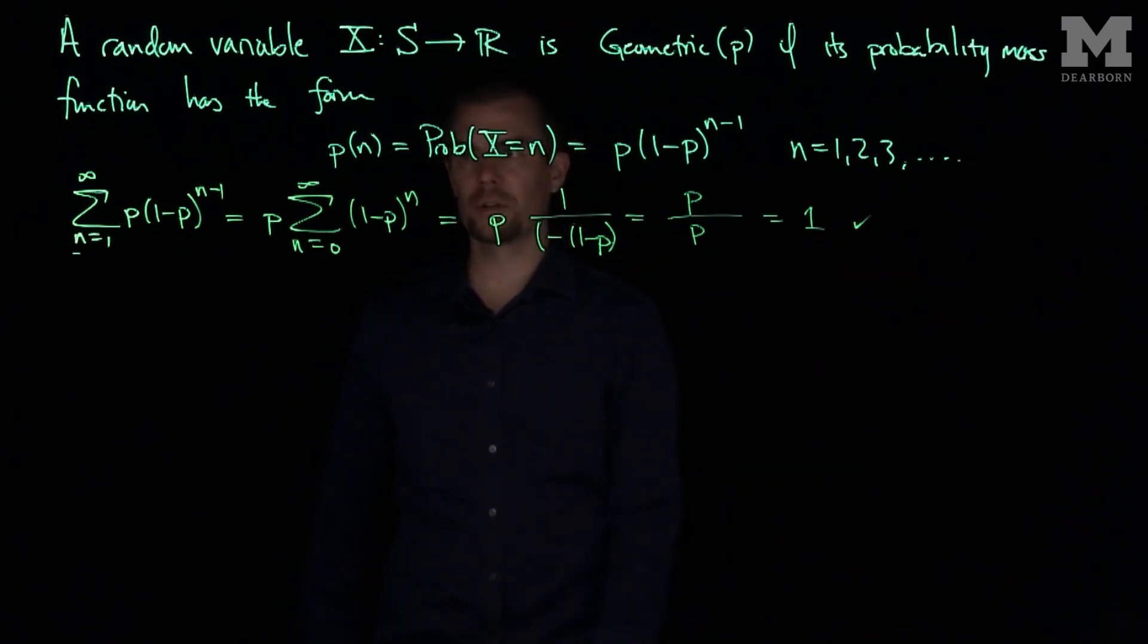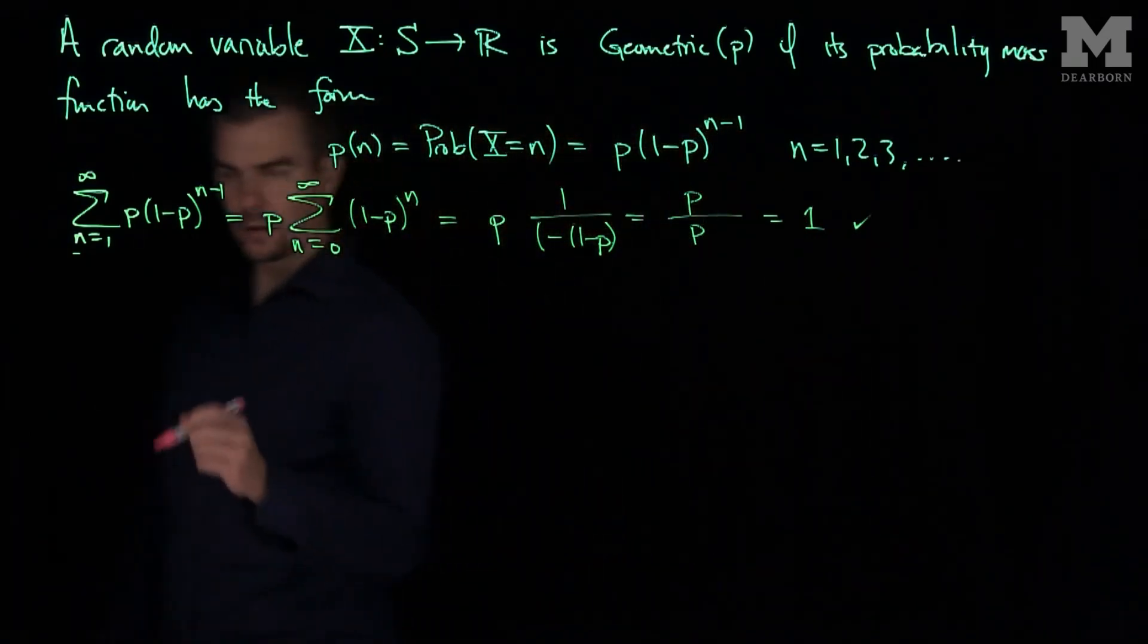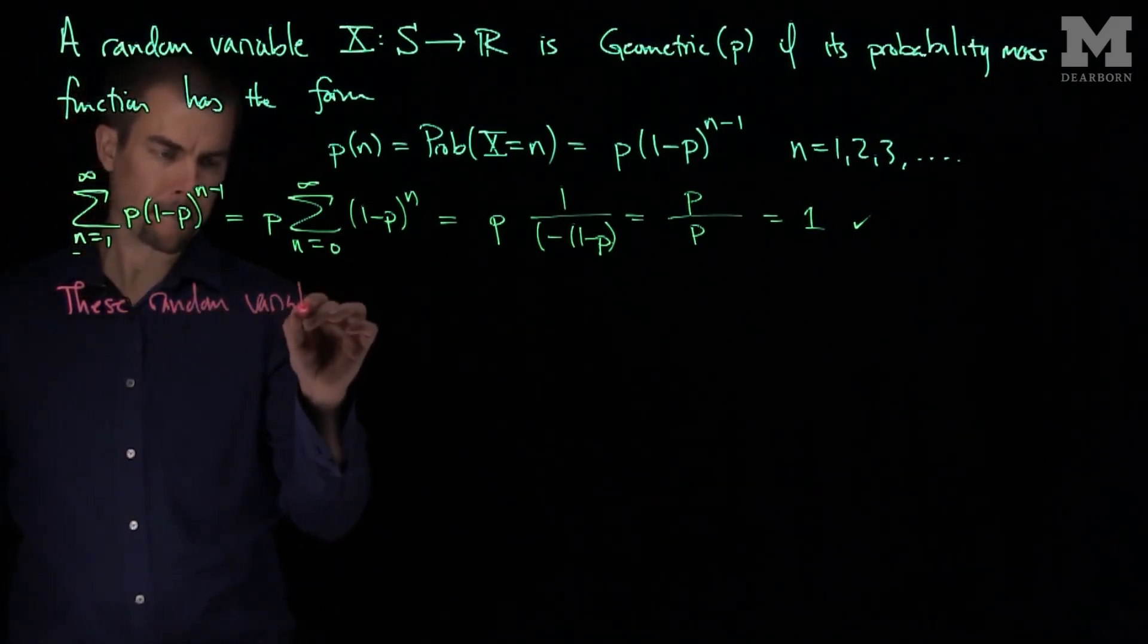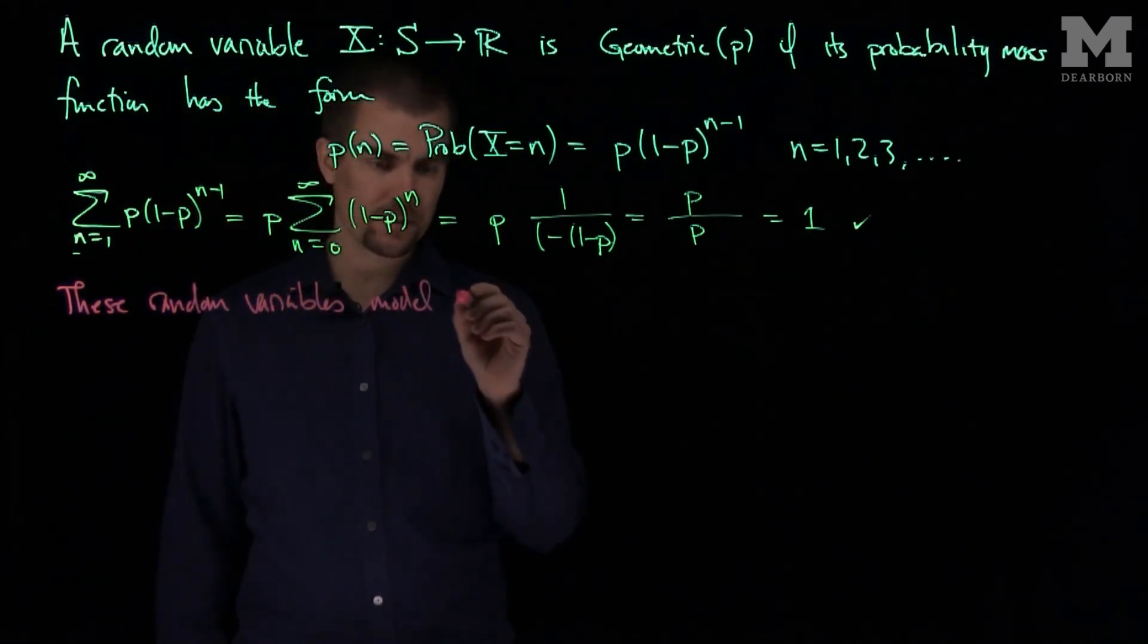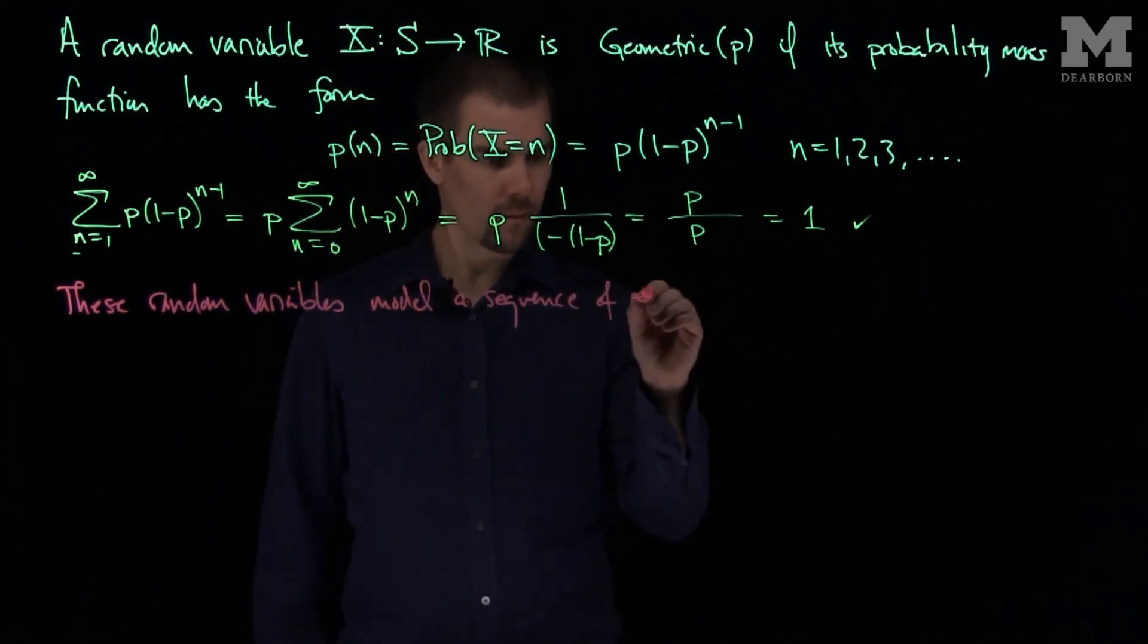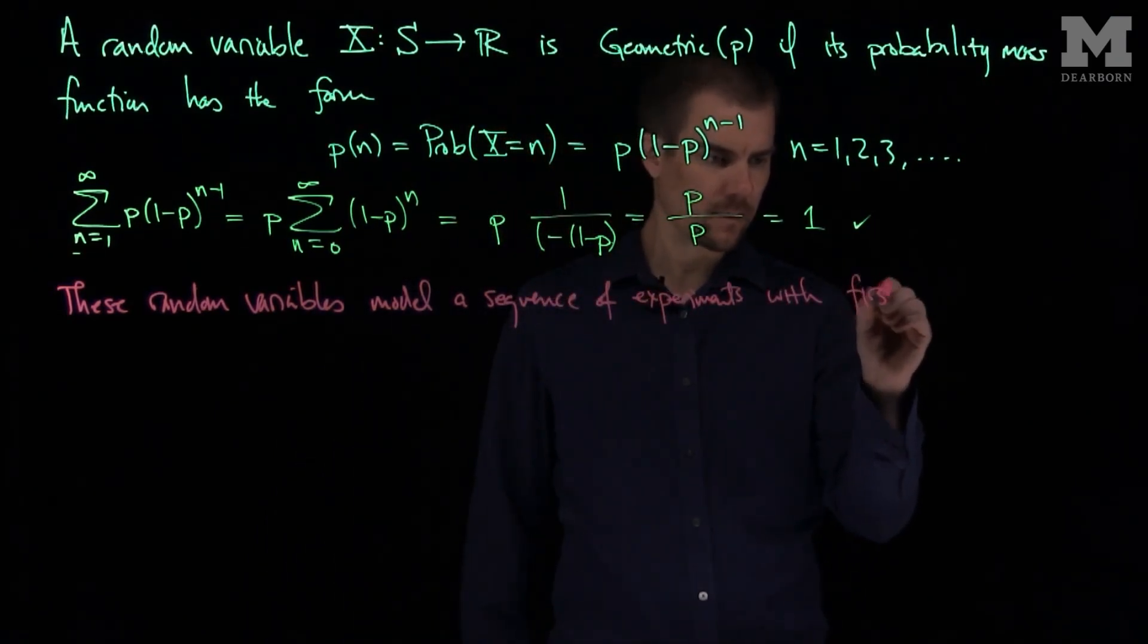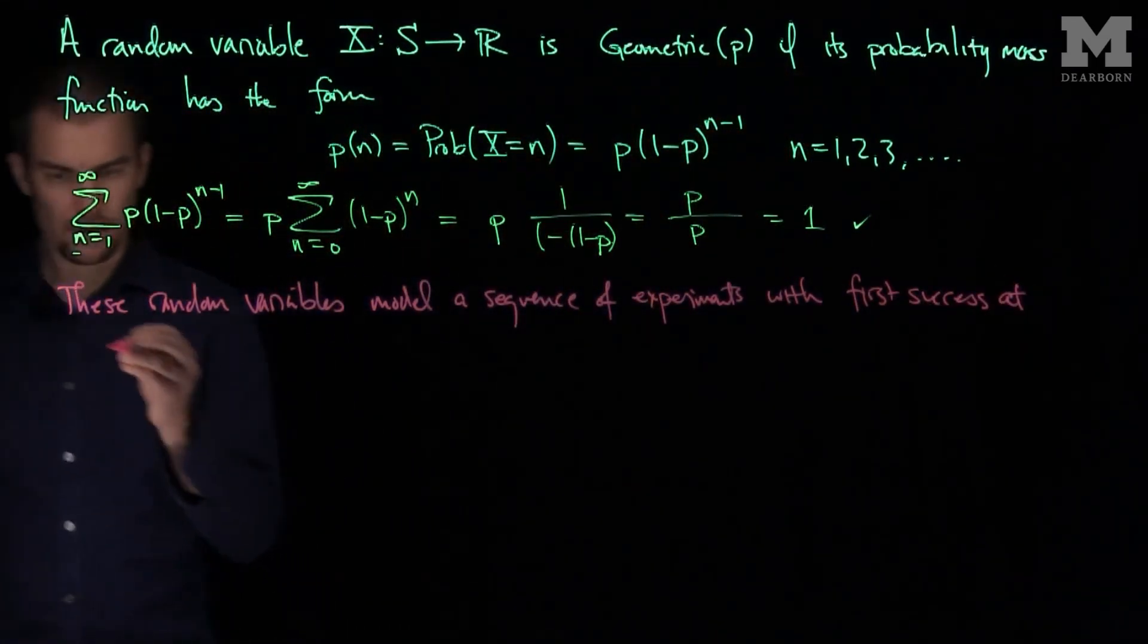So indeed this is a valid probability mass function. Typically what these geometric random variables model is a sequence of experiments with first success at a certain time.